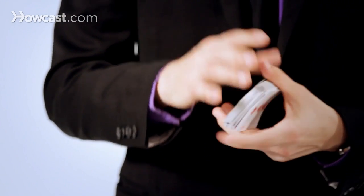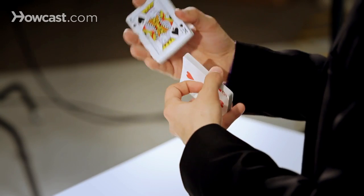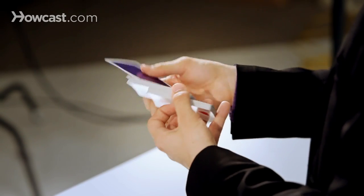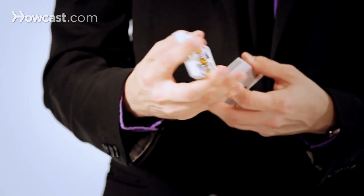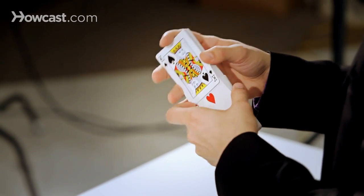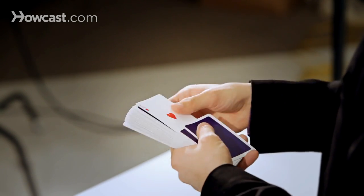When you're doing perfect ferro shuffles, there are two types. There are in-ferros, and there are out-ferros. An in-ferro is when the top card of the deck, we'll turn it face up for clarity, the ace of hearts gets shuffled in to the deck. So that means that the top card is now the second card.